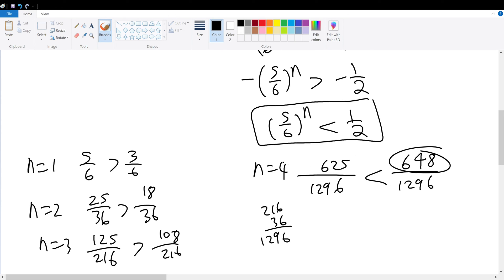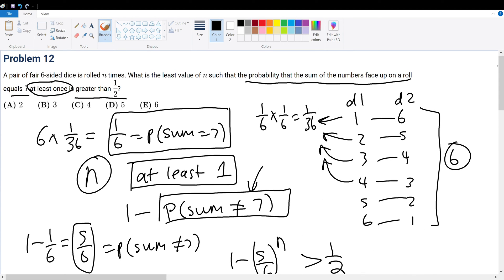So n=4 will be the least possible value of n such that this inequality holds true. The value of n equals 4 is our answer, so answer choice C must be the answer.